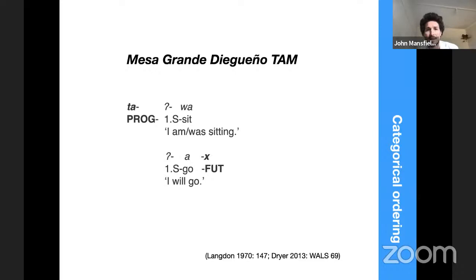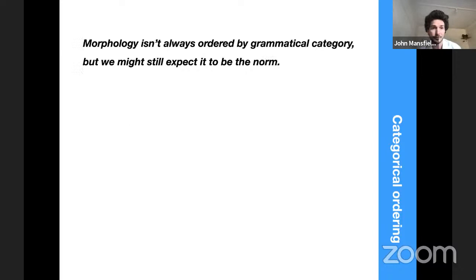One more example: in Mesa Grande de Agüeno, the TAM markers show that a progressive tense marker comes before the rest of the verb, compared to a future tense marker that comes after. So we have item-specific ordering. We can see then that in morphology, at least, markers and affixes are not always ordered according to their grammatical category — we also find some item-specific ordering.